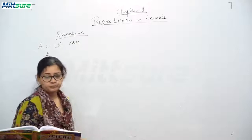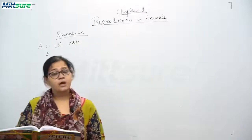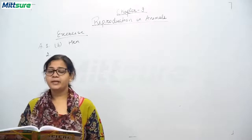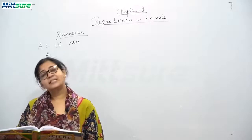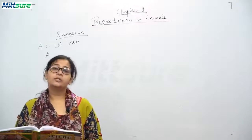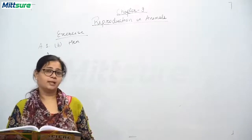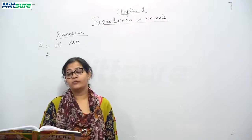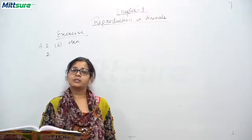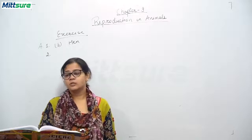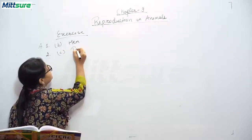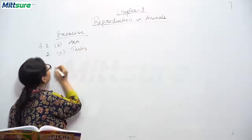Now, the second question: sperms are produced by — a) ovary, b) oviduct, c) testes, and d) uterus. Sperms are male gametes. Ovary, oviduct, and uterus are all female reproductive organ parts. So the correct option is c) testes.